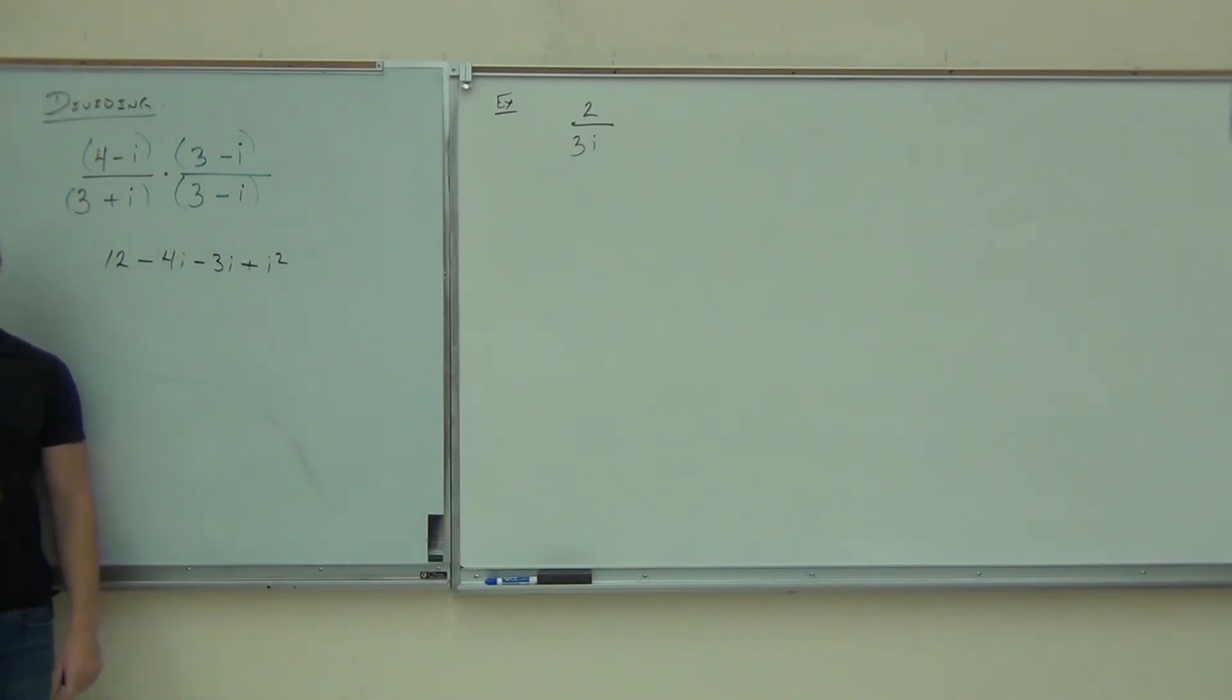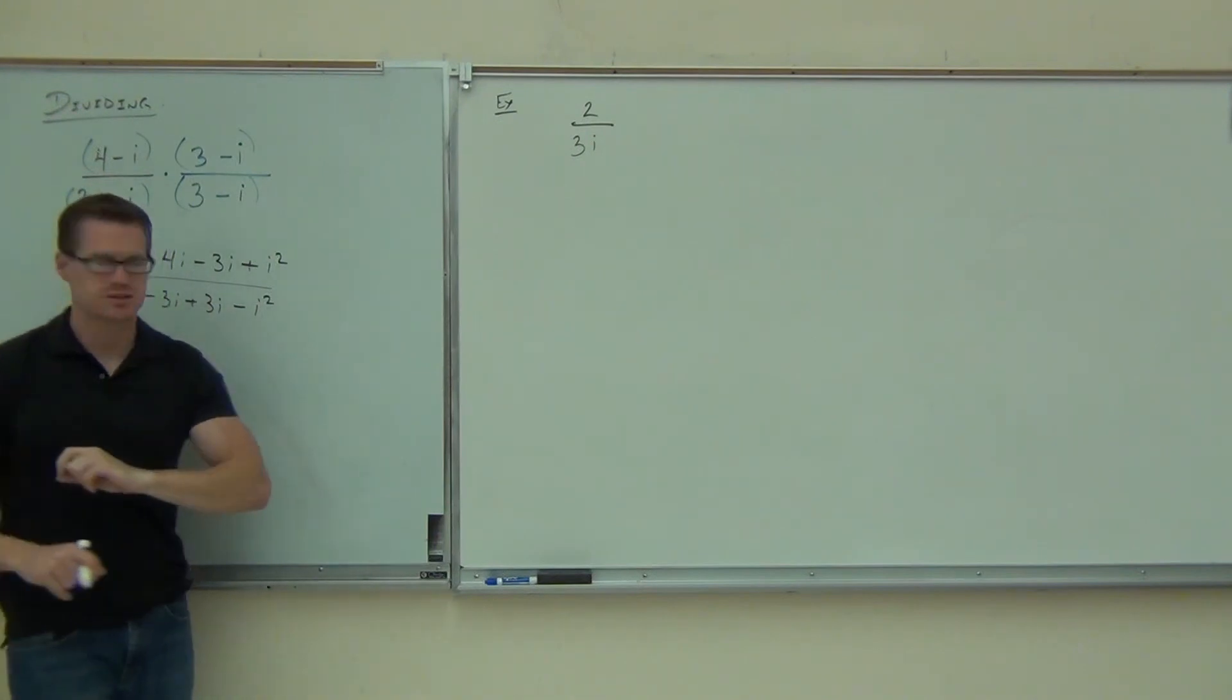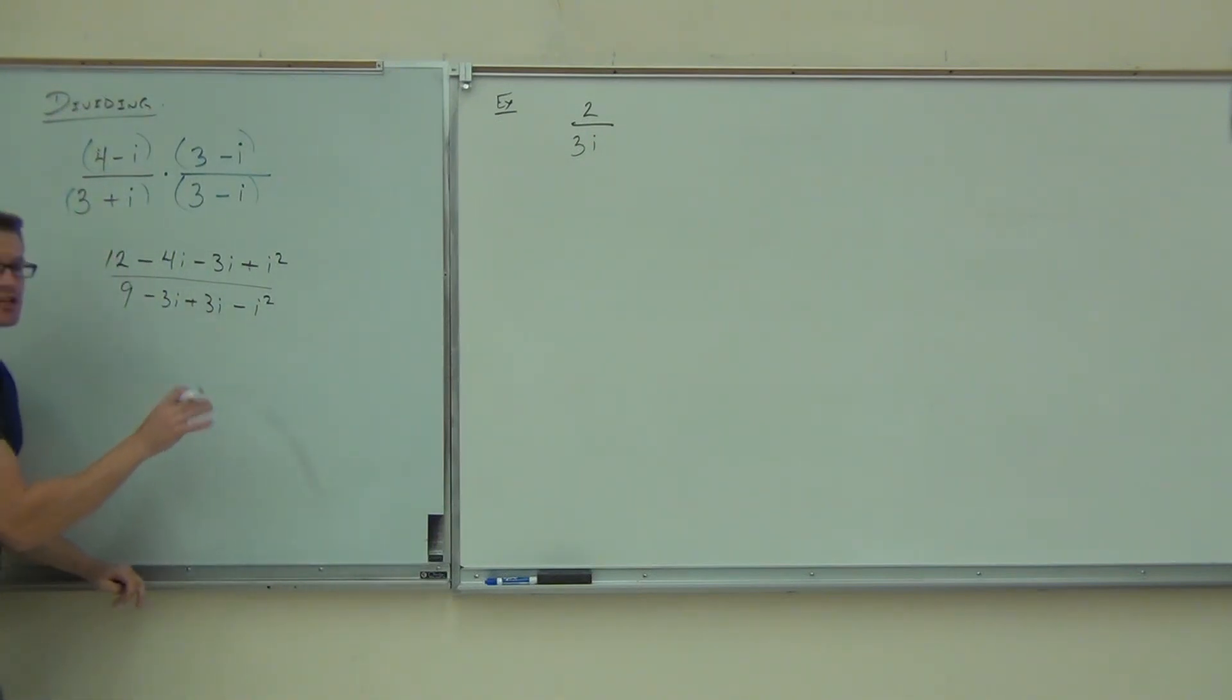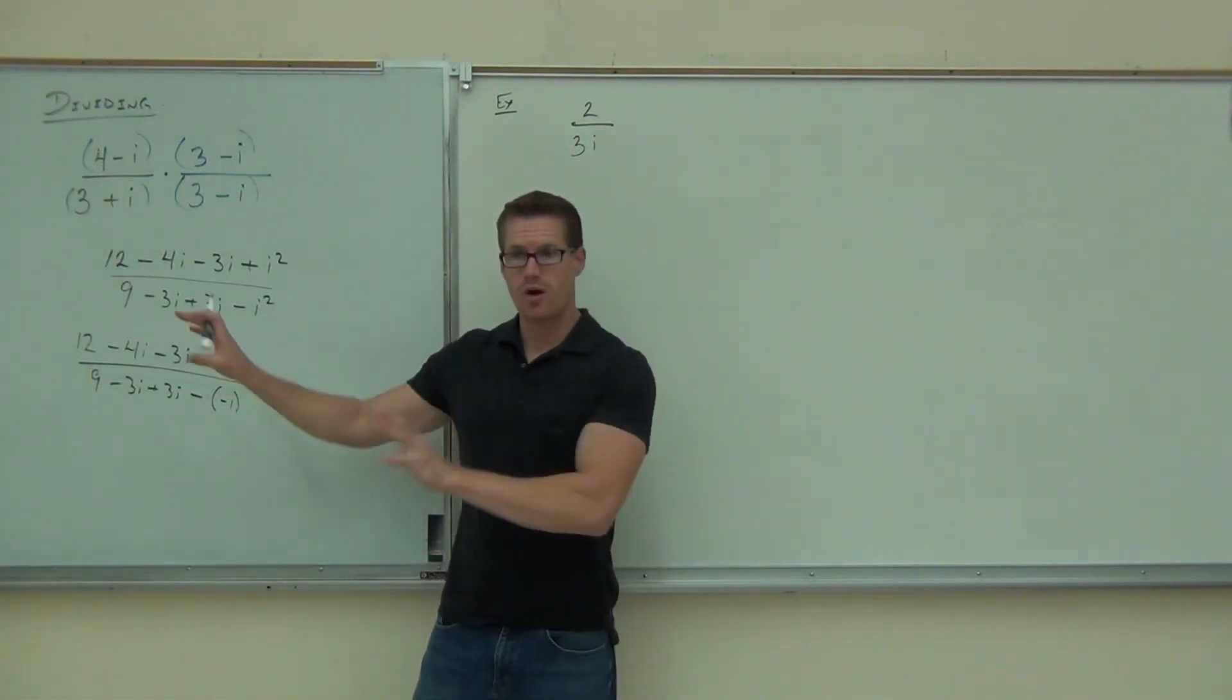Did you get that on your numerator? Twelve minus four i minus three i plus i squared? You get the i squared? You get the nine minus three i plus three i minus i squared? Hey, do these i squared simplify? Can you cross those out? No, because you're combining one. Yeah, you get some subtraction there and some addition. You can't do that. Next thing we're going to do is change any i squareds we have into negative ones. So we'll have the 12 minus four i minus three i, and then this is going to be plus negative one. i squared is negative one. I have nine minus three i plus three i, and minus negative one. So far, so good. Did you guys all make it down that far?